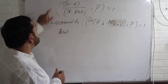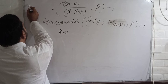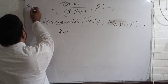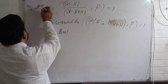So what was this? This was equal to G by N times HN by N.